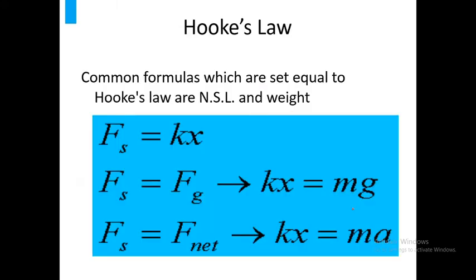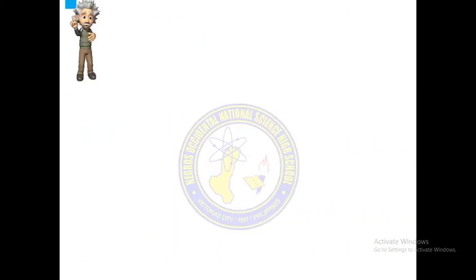Hooke's law is related to Newton's second law and weight. Remember when you were in grade 8, you discussed weight, which is W equals mg, and Newton's second law is force equals ma. Remember that weight is also a force. So Fs equals kx. Your Fs equals Fg, or kx equals mg. Therefore, kx is also equals to ma. G is the acceleration due to gravity and a is the acceleration of an object.